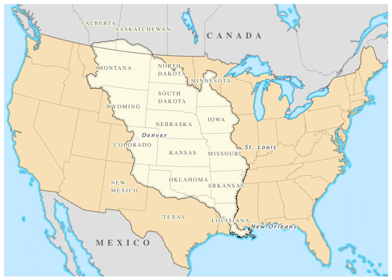On July 4, 1803, the treaty was announced, but the documents did not arrive in Washington, D.C. until July 14. The Louisiana Territory was vast, stretching from the Gulf of Mexico in the south to Rupert's Land in the north, and from the Mississippi River in the east to the Rocky Mountains in the west. Acquiring the territory would double the size of the United States, at a sum of less than 3 cents per acre.